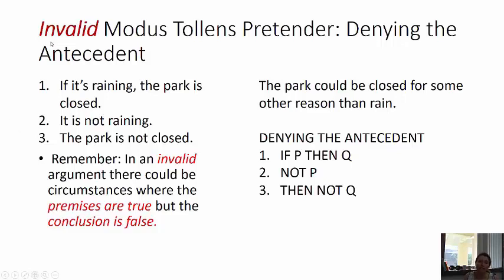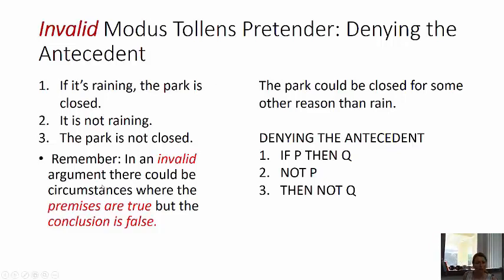Raining is a sufficient condition for the park being closed, but there are other reasons the park could be closed — they could have sprayed the park with pesticide, or they're redoing the sprinkling system. In an invalid argument, there could be circumstances where the premises are true and the conclusion is false. That's the counter-example method. Fallacy of denying the antecedent.